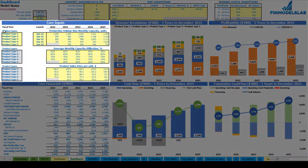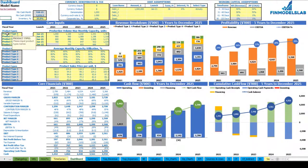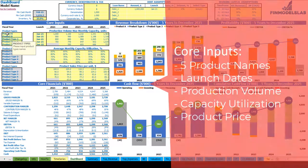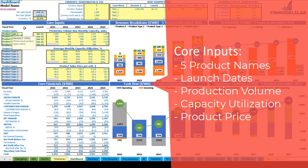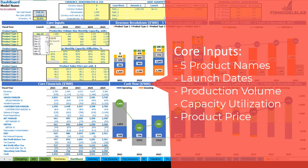Let's start from the core inputs. On the top left section you have up to five product types or groups. All these yellow cells are changeable, so you can set up product A, product B, or any other name you would like. The next step is to set up the launch date or start of production for each of these product types. You can use a dropdown and set any month within this five-year model.